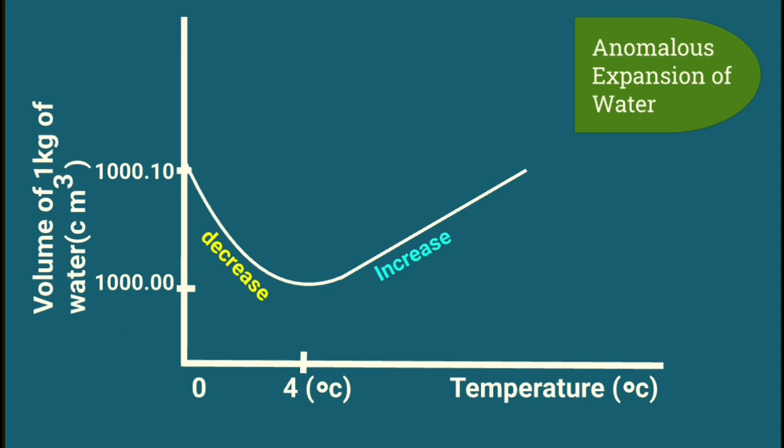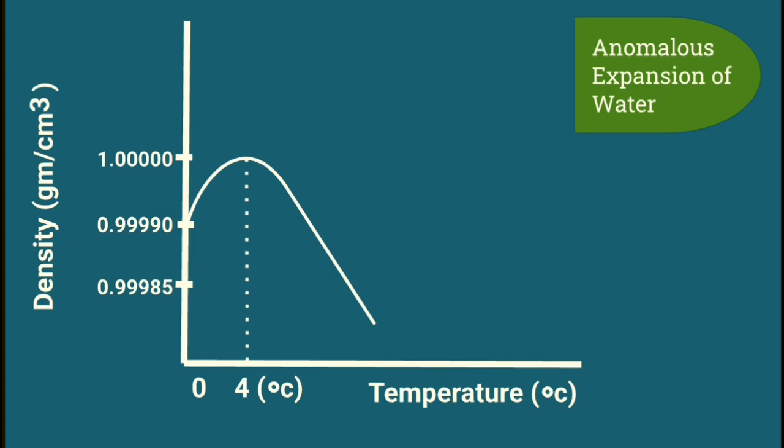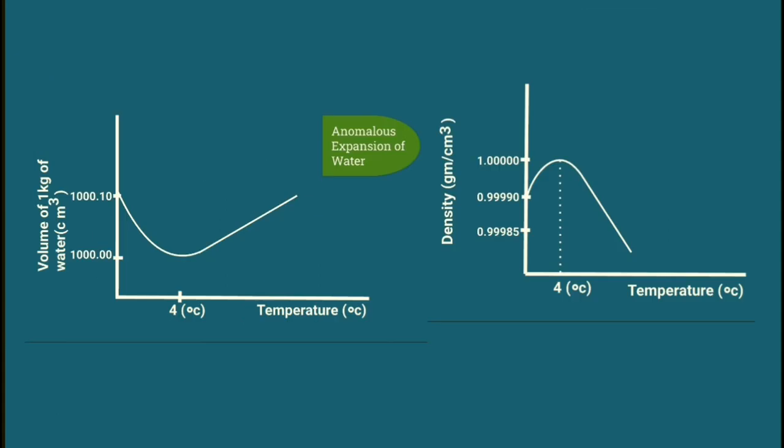This unusual expansion of water in the range 0 to 4 degrees Celsius is known as anomalous expansion of water. Thus we can say water occupies minimum volume and hence maximum density at 4 degrees Celsius.